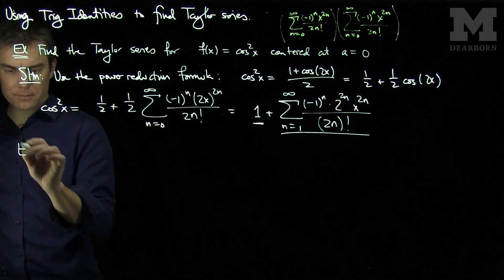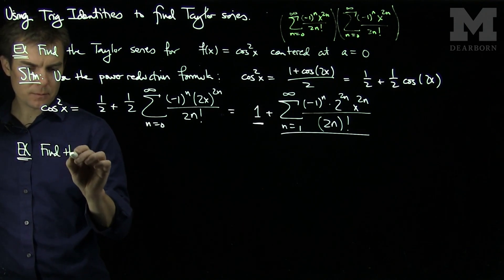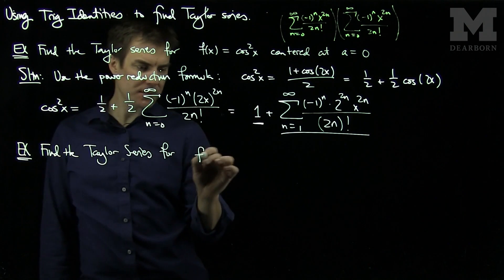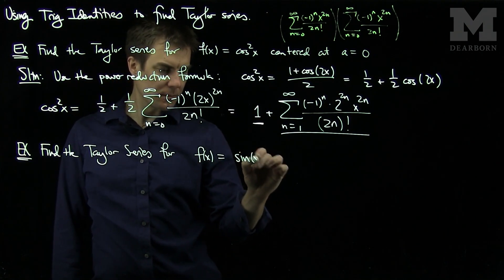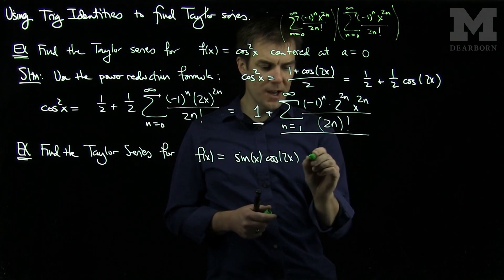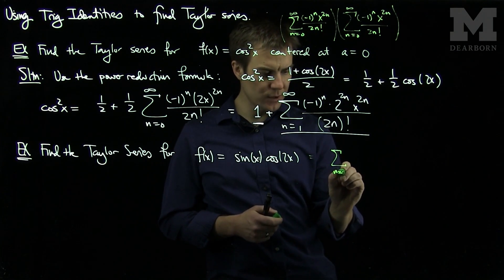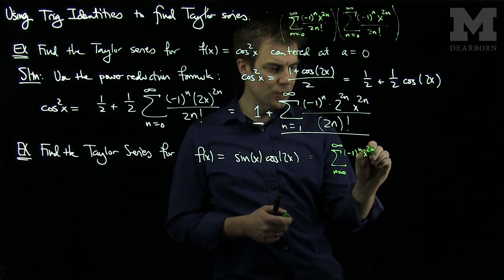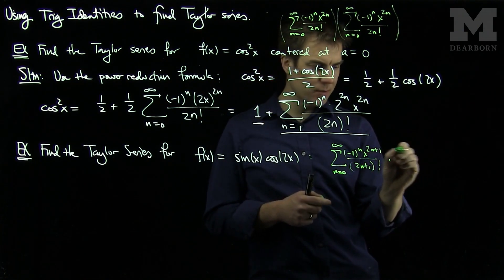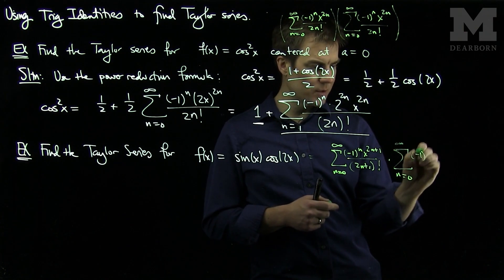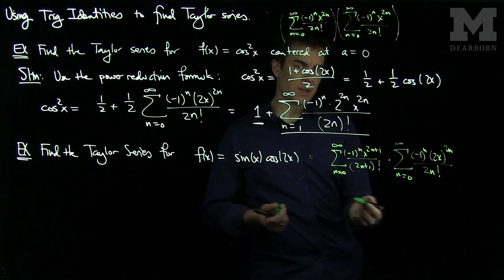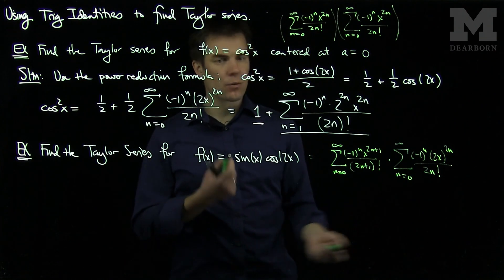Let's look at another example. Let's find the Taylor series for f(x) = sin(x)cos(2x). We could write this as the sum n=0 to infinity of (-1)^n x^(2n+1) / (2n+1)! times the sum n=0 to infinity of (-1)^n (2x)^(2n) / (2n)!, but multiplying these series out would be a lot of work and pattern recognition.